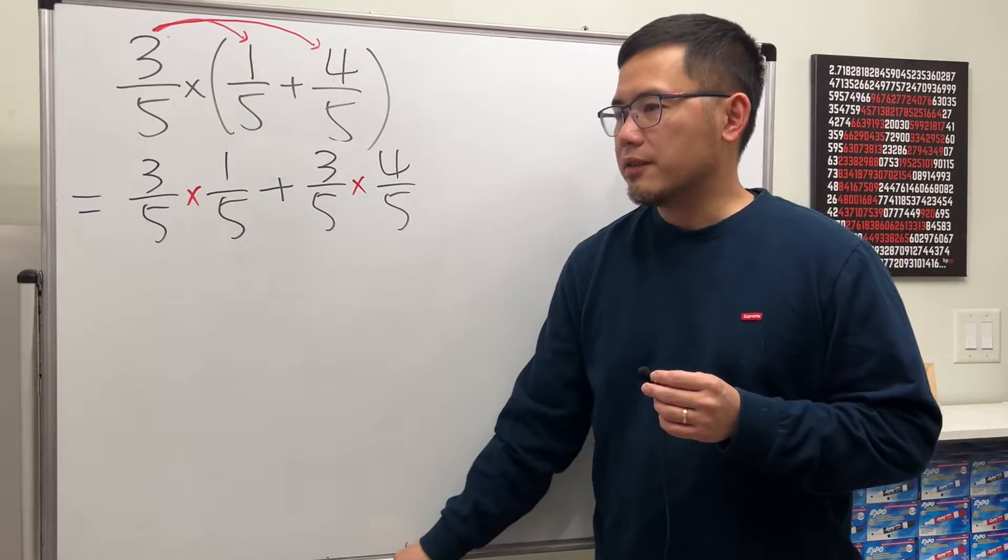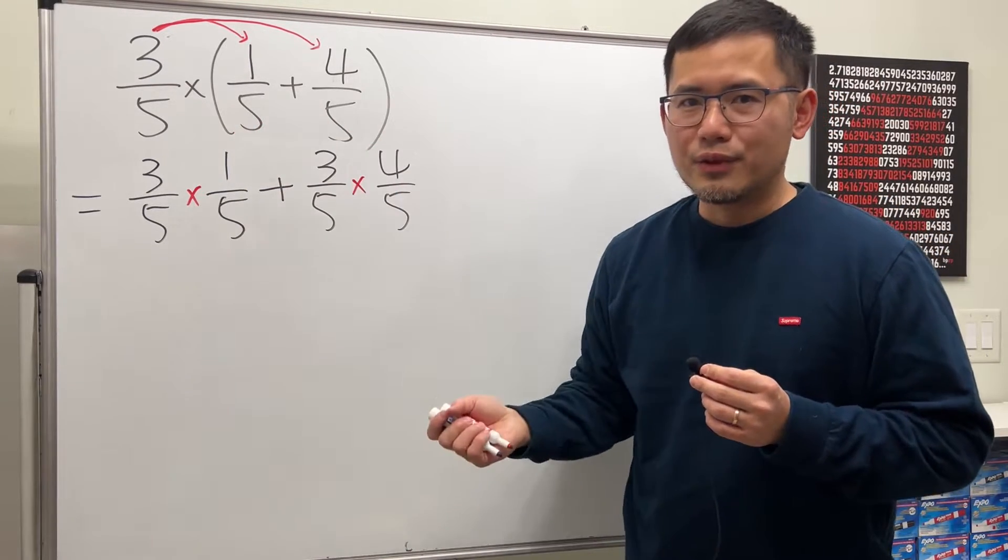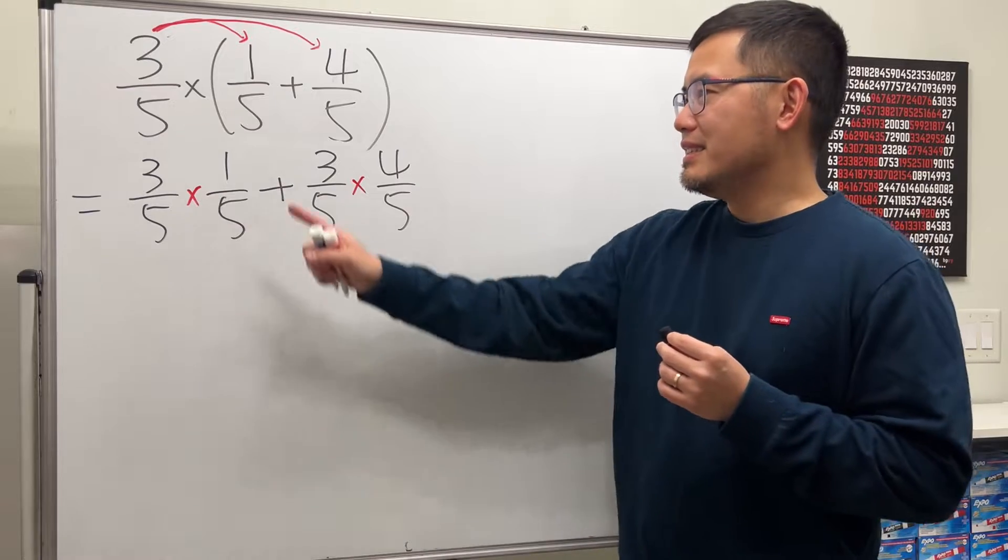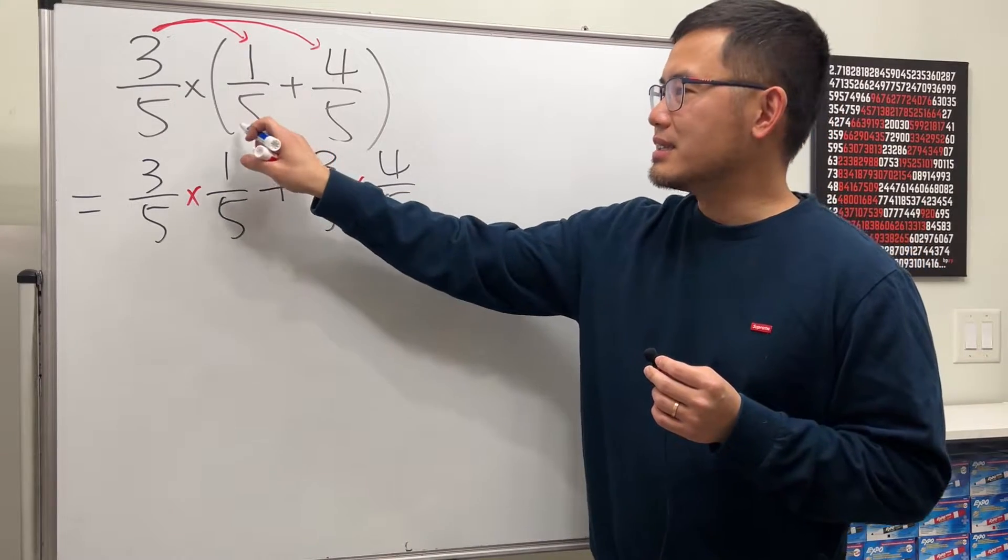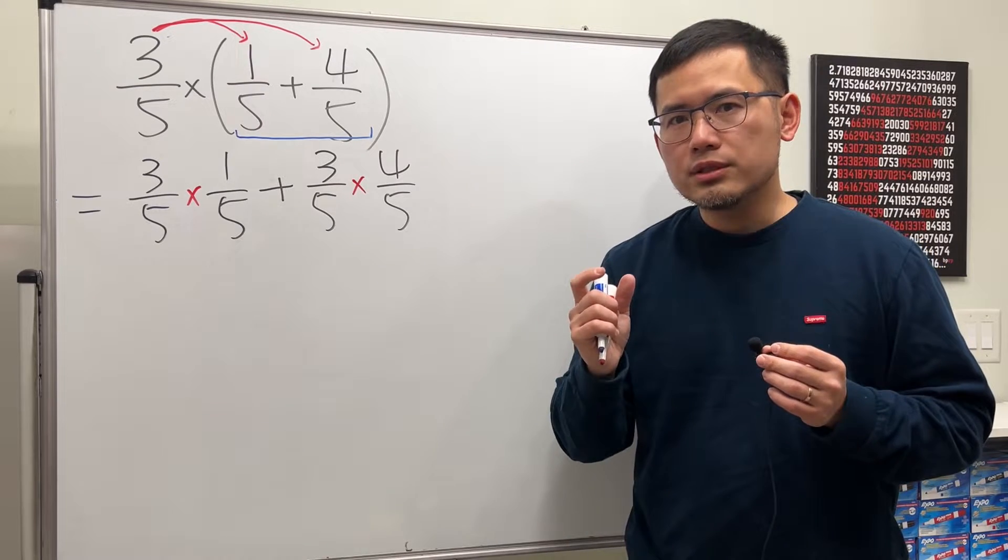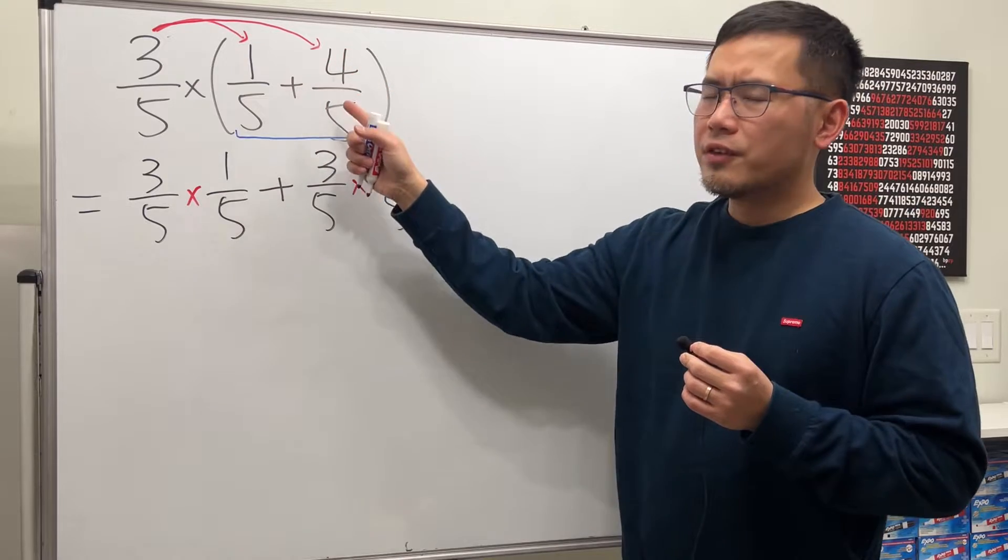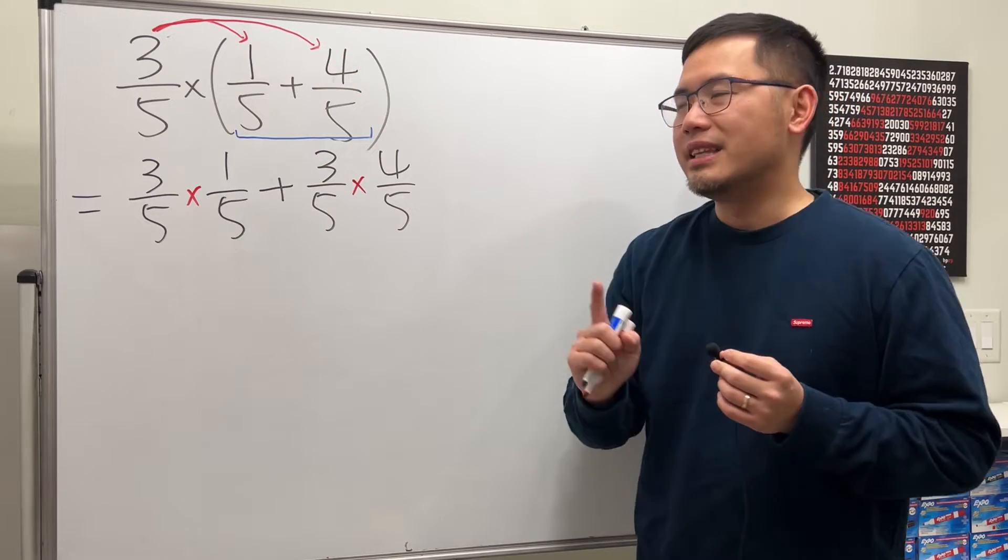I believe your concern is the following. It's like, people will just tell you, do the inside first. In fact, yes, we should totally do the inside first. Because that's the order of operations, you should always do the inside first. 1 over 5 plus 4 over 5, can we do that? Yes, and that's the key.